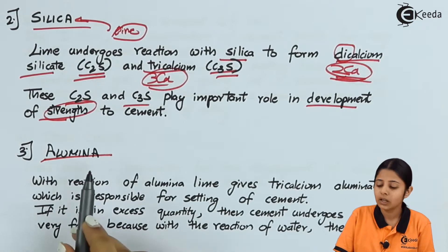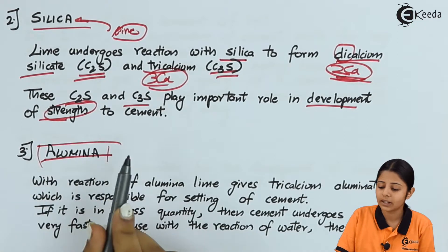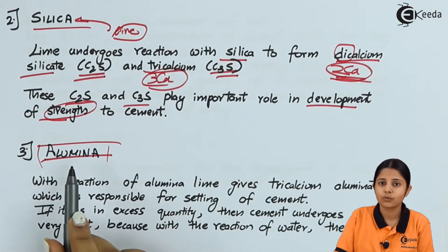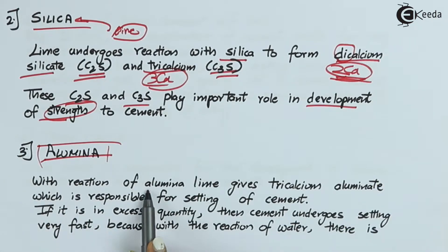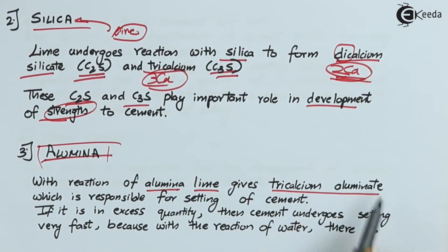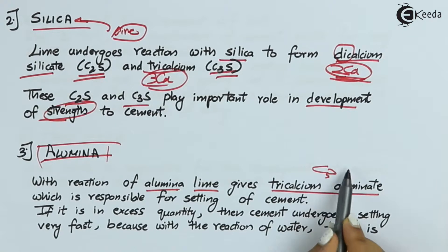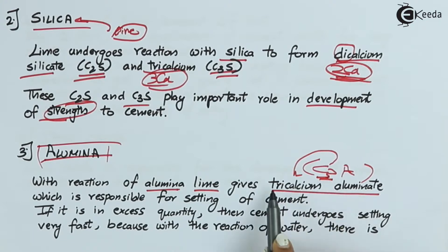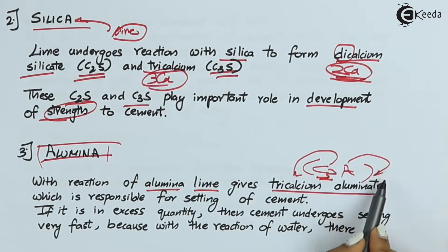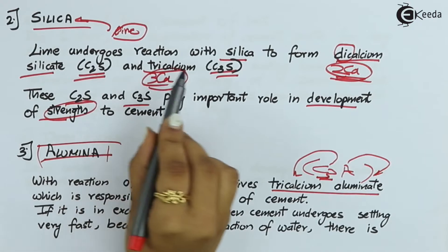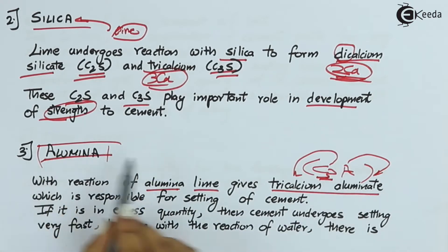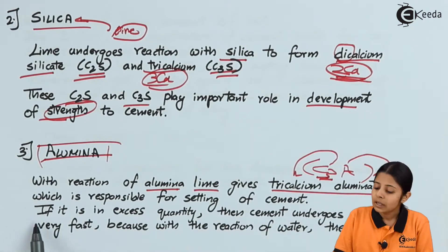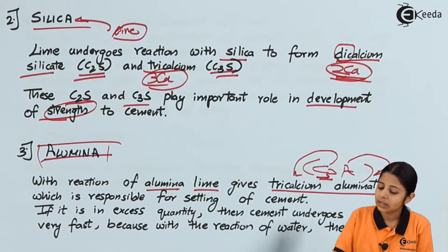The third ingredient is alumina. Lime also reacts with alumina, and with this reaction Lime gives tricalcium aluminate, written as C3A, where C stands for calcium and A stands for aluminate. Tricalcium aluminate is responsible for the setting of cement. For silica we have dicalcium and tricalcium silicates; for alumina we have tricalcium aluminate, which is responsible for setting of cement. If alumina is in excess quantity, cement undergoes setting very fast.